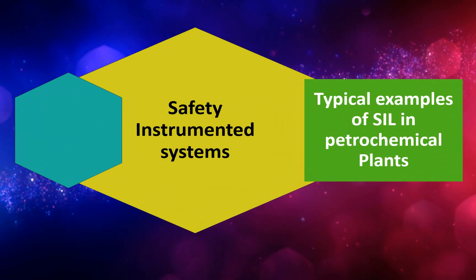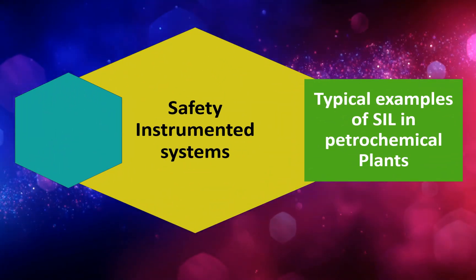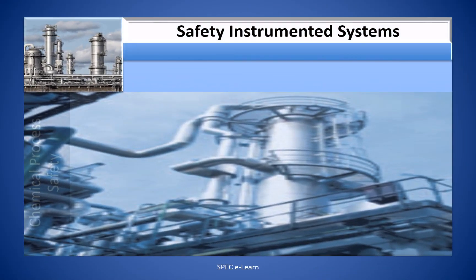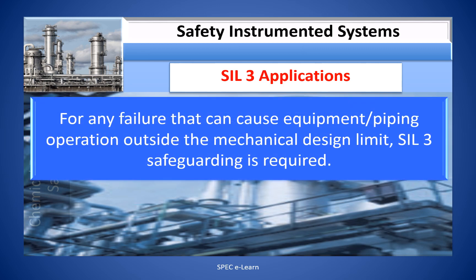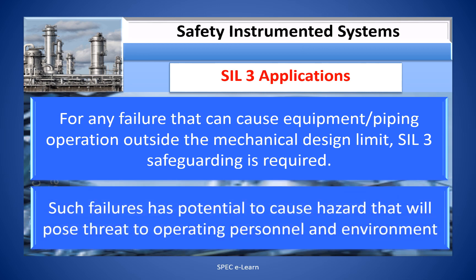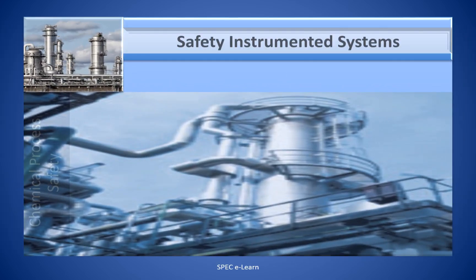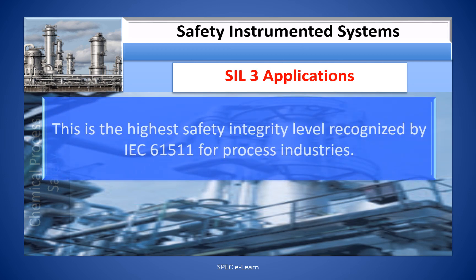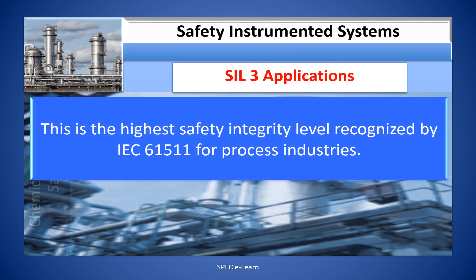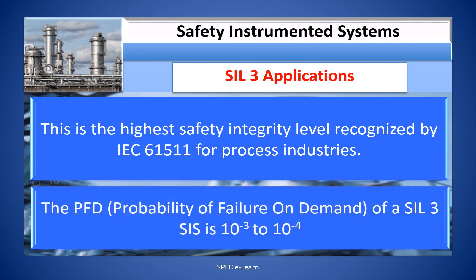Typical examples of Safety Integrity Levels in petrochemical plants. SIL 3 example: for any failure that can cause equipment and piping to operate outside the mechanical design limit, SIL 3 safeguarding is required. Such failures have the potential to cause hazards that will pose a threat to operating personnel and the environment. This is the highest safety integrity level recognized by standard IEC 61511 for process industries. The PFD of a SIL 3 SIS is 10 to the power of minus 3 to 10 to the power of minus 4.